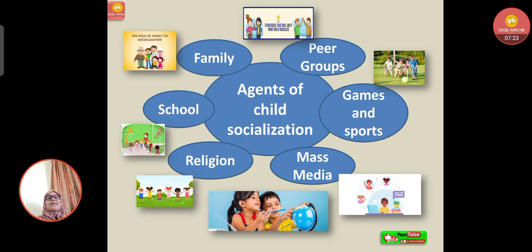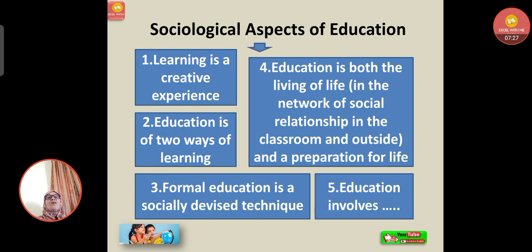Now, the sociological aspects of education. Firstly, learning is a creative experience — when a person responds to stimuli, he acts in a creative manner; in other words, education is a creative act for the learner. Secondly, education involves two ways of learning: informal education and formal education. Formal education is a socially devised technique, a highly elaborated procedure for creating situations in which the pupil may learn. Individuals go through formal education only for a short period of their life — going to school, college, universities, etc.